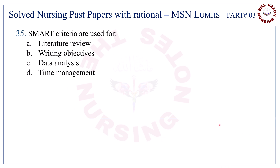Question number 35. SMART criteria are used for — the correct answer is B — writing objectives.